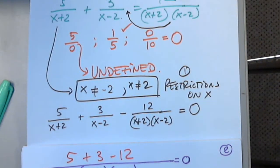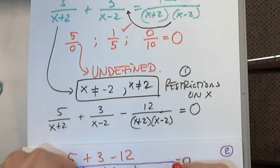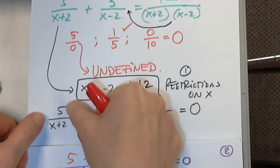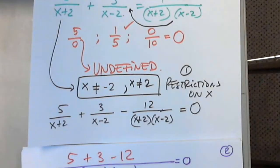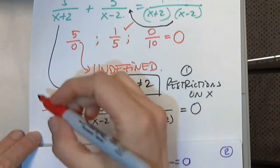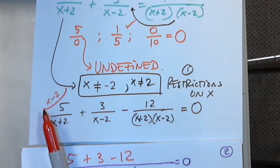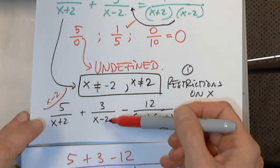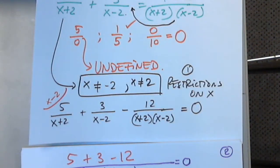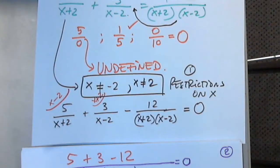When I multiply the denominator by x minus 2, I have to do the same thing to the numerator. I'm writing myself a reminder: remember you multiplied x plus 2 by x minus 2, so you have to also multiply the numerator by x minus 2. So x minus 2 is multiplied by x plus 2 to get the LCD.